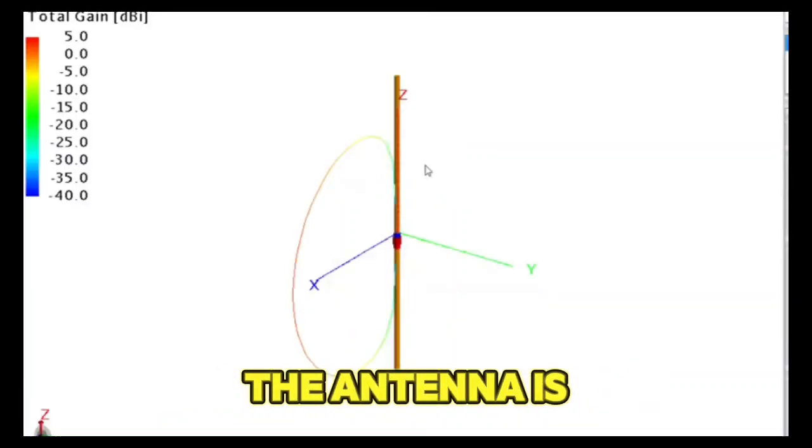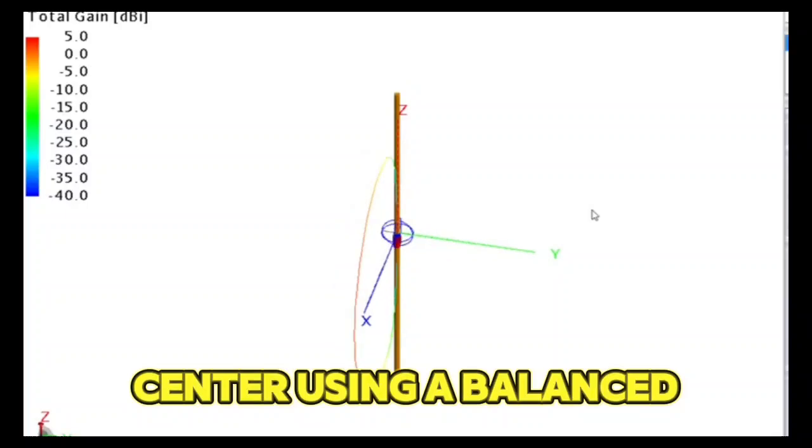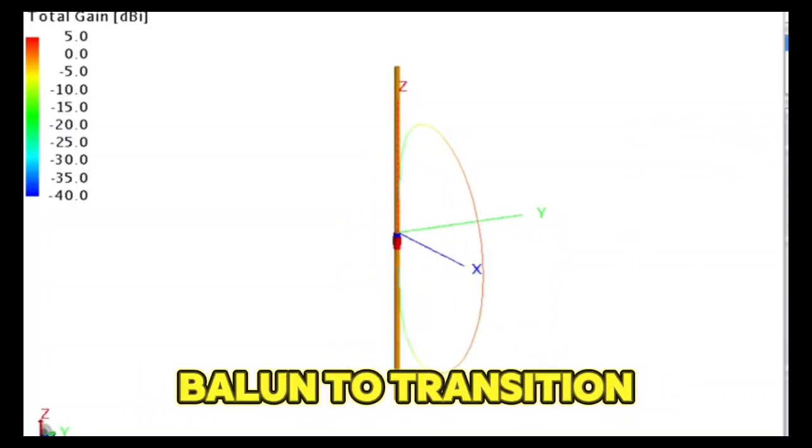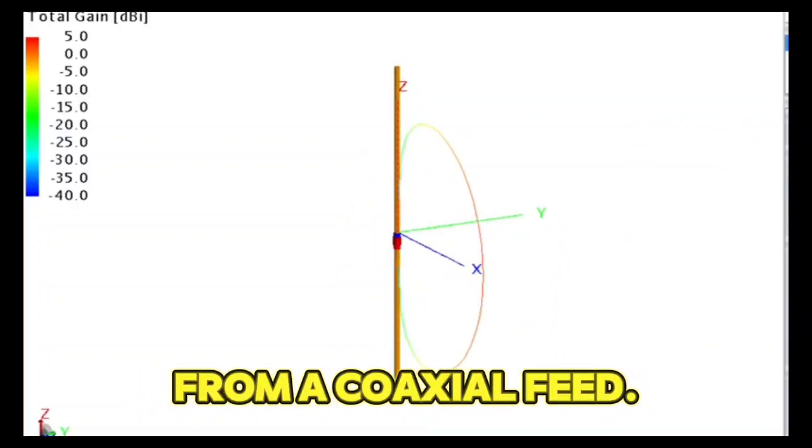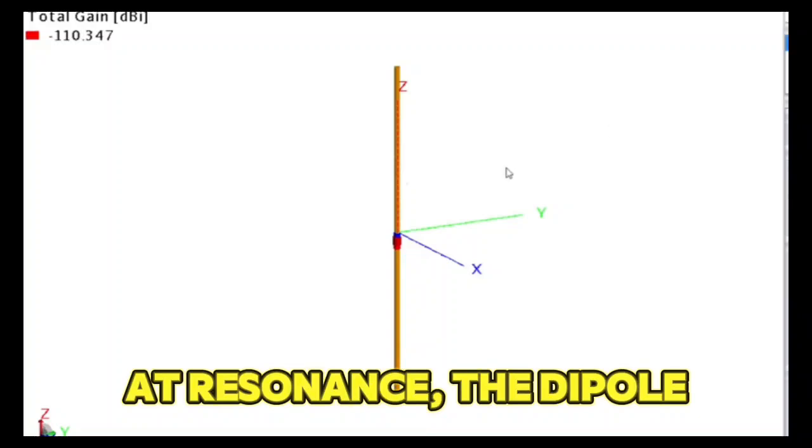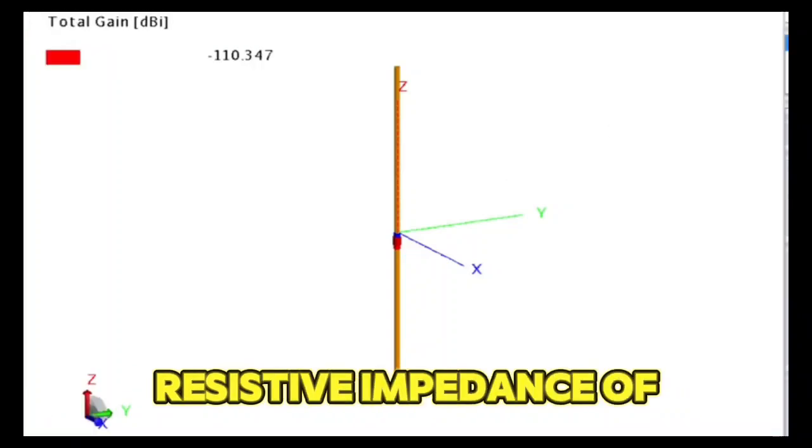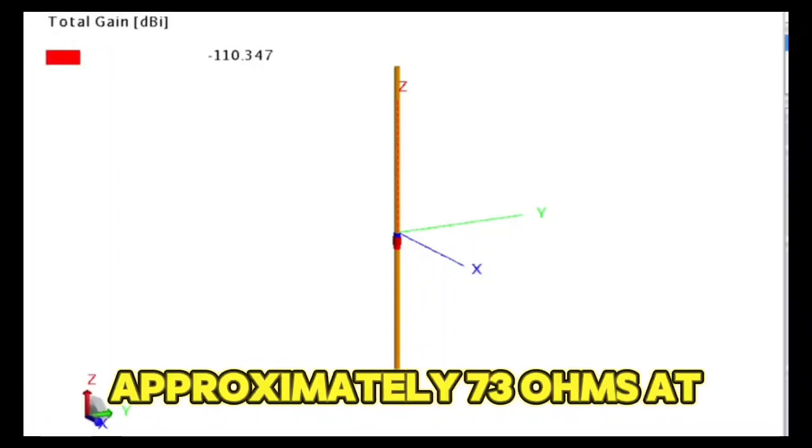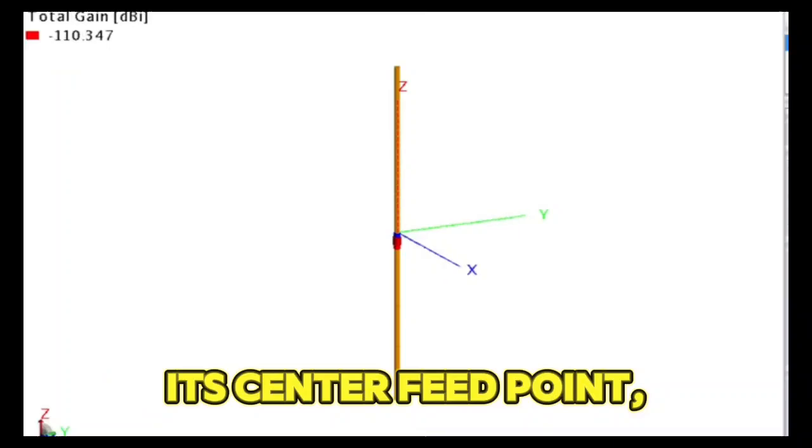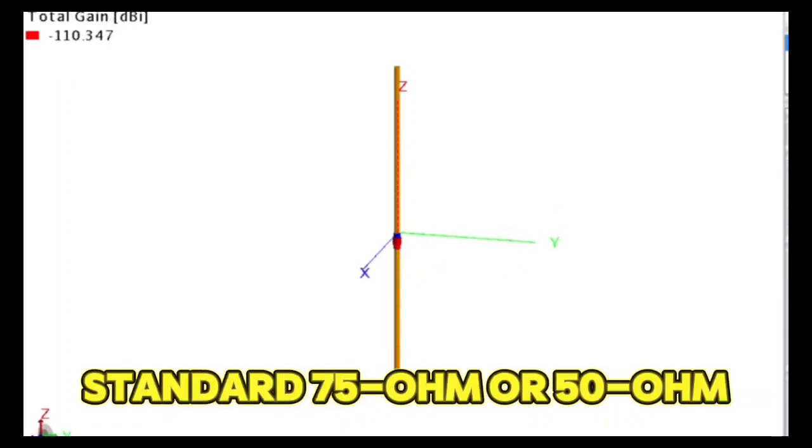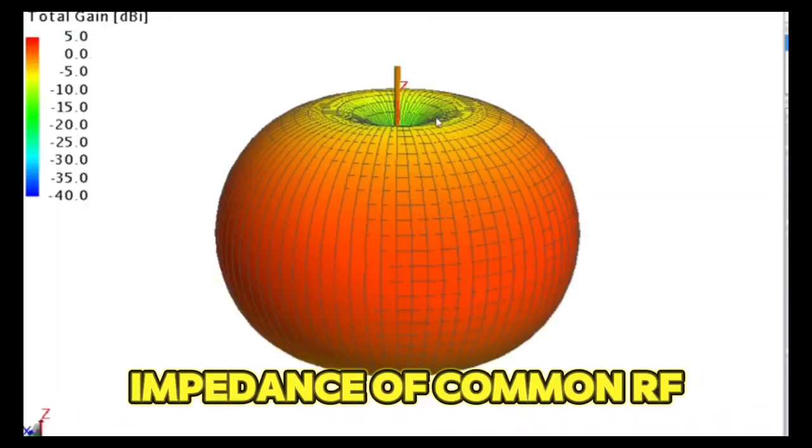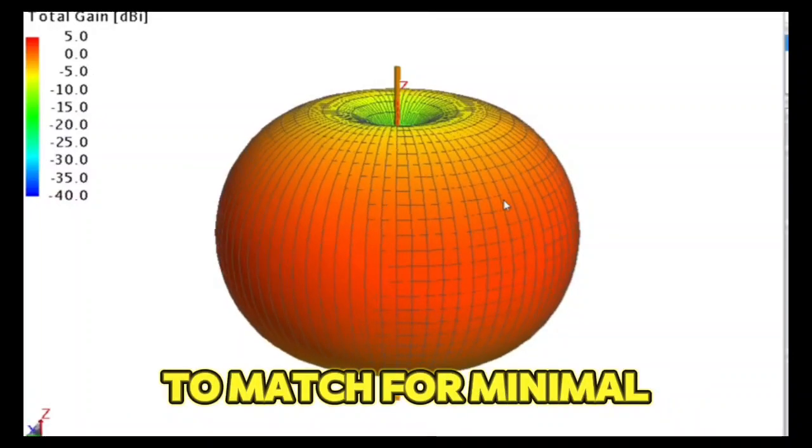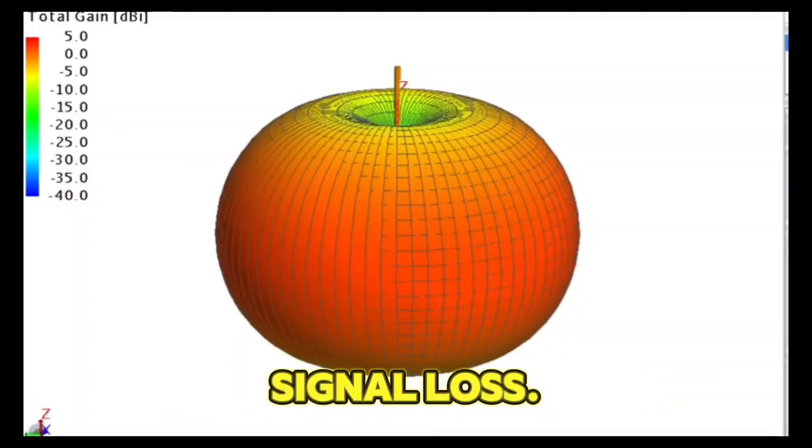The antenna is typically fed at its center using a balanced transmission line or a balun to transition from a coaxial feed. At resonance, the dipole presents a purely resistive impedance of approximately 73 ohms at its center feed point, which is close to the standard 75 ohm or 50 ohm impedance of common RF equipment, making it easy to match for minimal signal loss.